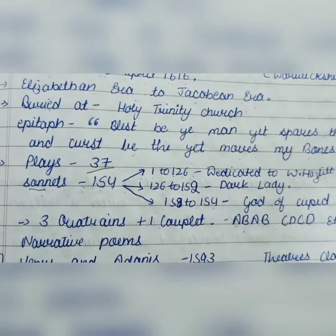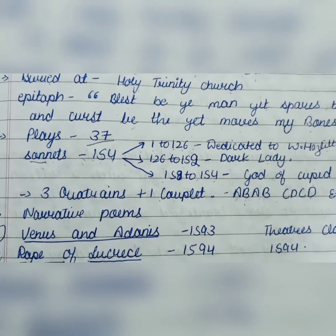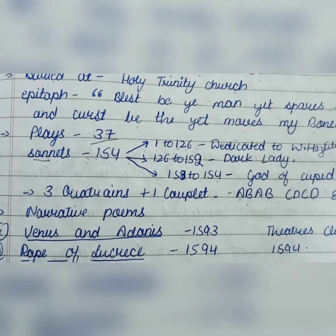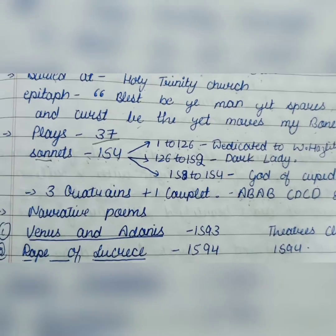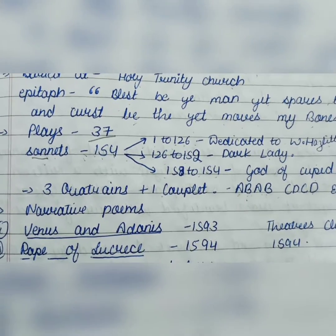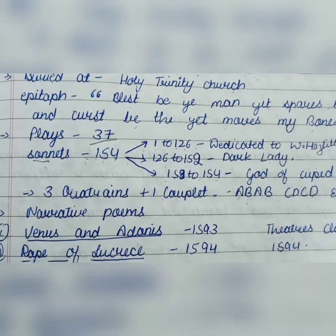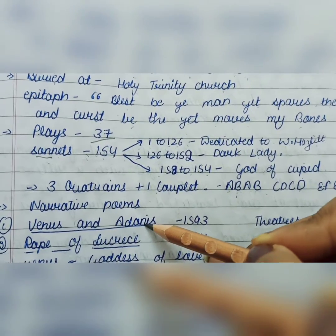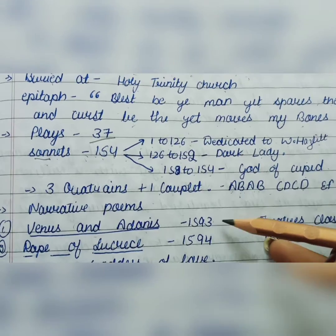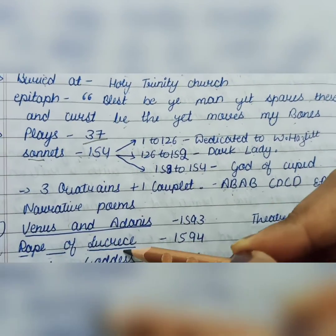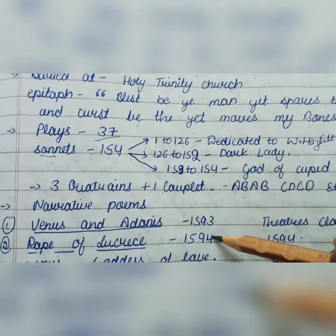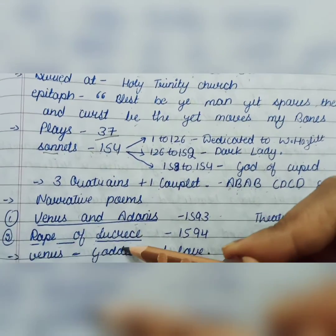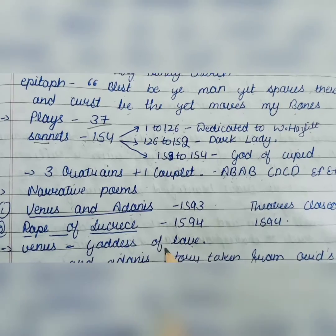You must remember that during the period of 1592 to 1594, theaters were closed, and that is why Shakespeare wrote poems instead of plays during that period. He wrote two important narrative poems: Venus and Adonis in 1593, and The Rape of Lucrece in 1594. Venus is the goddess of love.